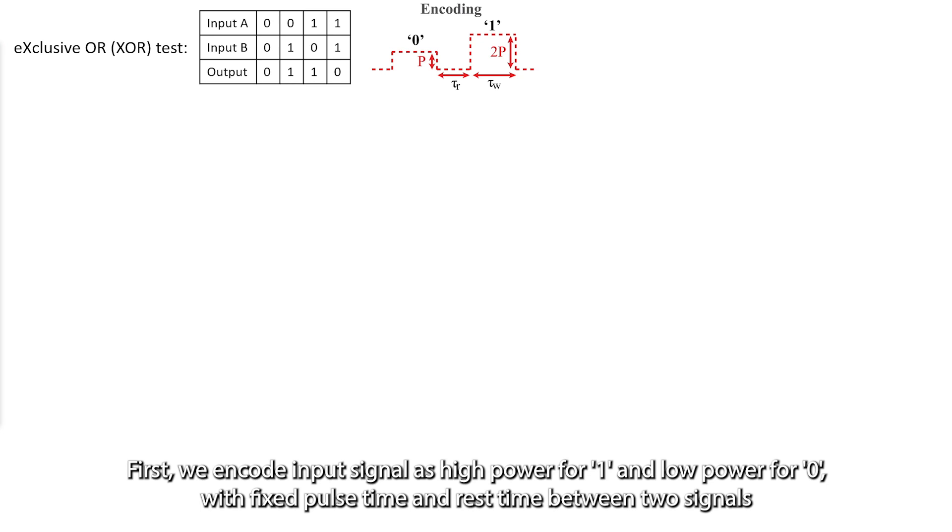For example, we can perform basic exclusive OR tests which require memories from the previous input. First, we encode input signal as high power for 1 and low power for 0, with fixed pulse time and rest time between two signals.